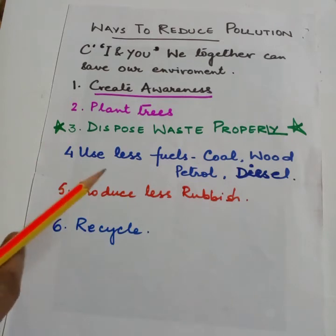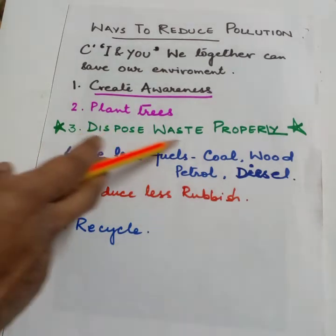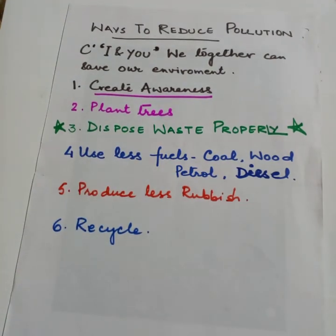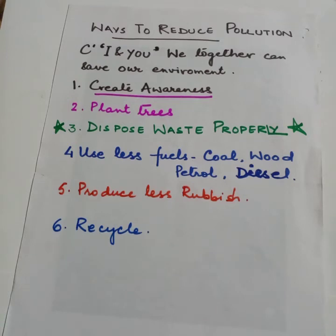Harmful substances called pollutants pollute the environment. The dumping of human waste into rivers pollutes water. Polluted water, if used in daily life activities, would spread diseases. Every day we produce a large amount of rubbish that needs to be disposed of properly; otherwise it will pollute air, water, and land. Chemical waste products from factories, if dumped carelessly, can pollute land and water.